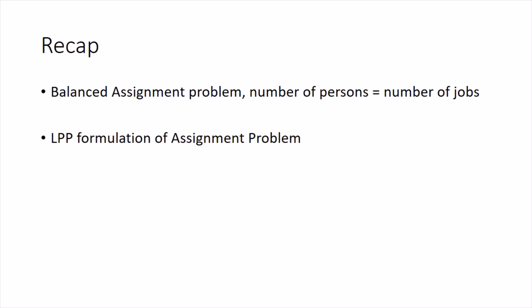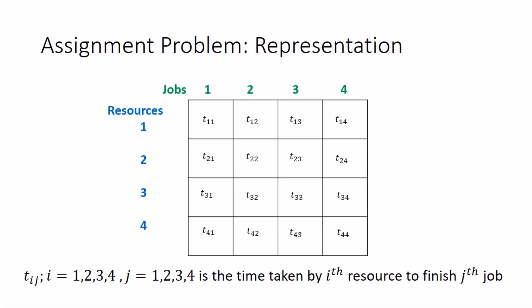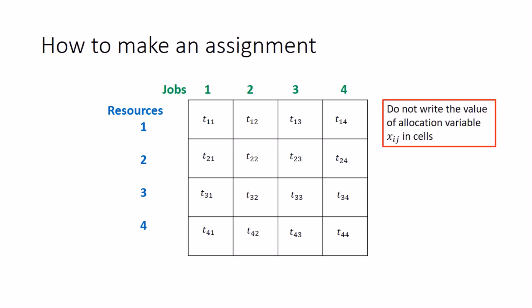We want to focus on solving this balanced assignment problem. Recall the representation of an assignment problem as a matrix, in which the rows represent the resources — all the persons — and the columns are the jobs. The t_ij values are the time taken by the i-th resource to finish the j-th job. We want to mark the allocations in the cells to denote which person has been assigned which job. The variable x_ij can take only two values: either one or zero.